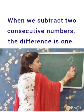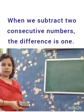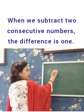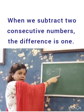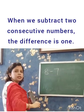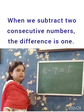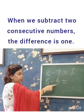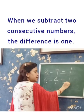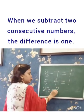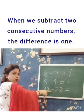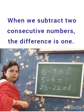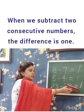When we subtract 2 consecutive numbers — consecutive numbers are numbers which come just one after the other — like 8 minus 7: 7 and 8 are consecutive numbers, so the difference is 1. 5 minus 4: 4 and 5 are consecutive numbers, so the difference is 1. 23 minus 22: 22 and 23 are consecutive numbers, so the difference is 1. The difference of 2 consecutive numbers is always 1.